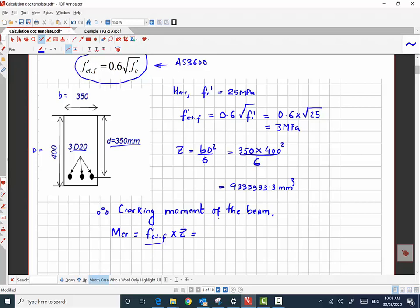So f dash ct dot f is 3 megapascal multiplied by z, and that will give us the result in Newton millimeter.